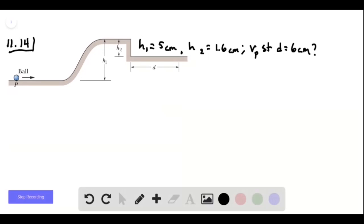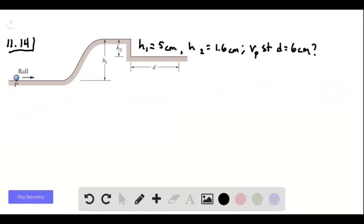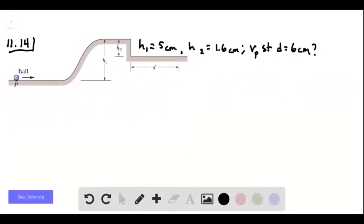Problem 11.14. We have a ball that starts rolling in this flat area. It then goes up this ramp onto this flat plateau. It shoots off onto what we're told is a game board and it goes to some distance d.